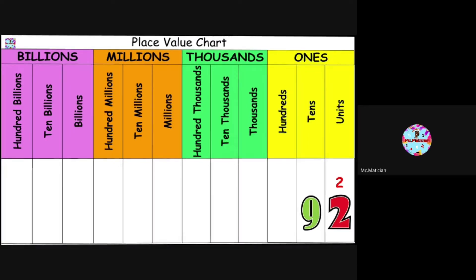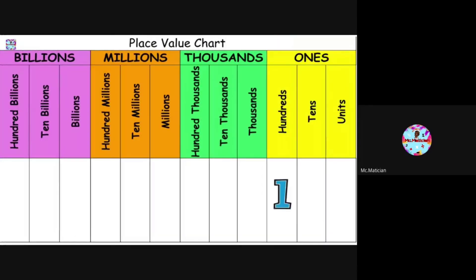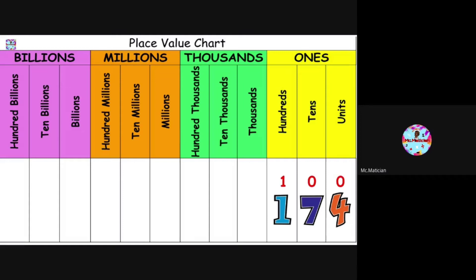Let's try another example. Read the number on the screen: 174. 174 is made up of three digits: 1, 7, and 4. Let us see exactly what each digit is worth. 1 multiplied by 100, because it sits in the hundreds place, gives us 100. 7 multiplied by tens gives us 70. And 4 multiplied by 1 gives us 4.